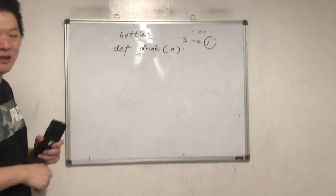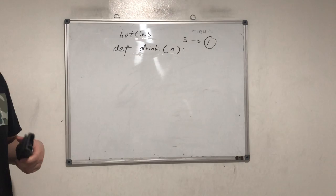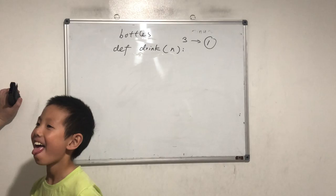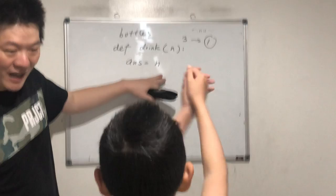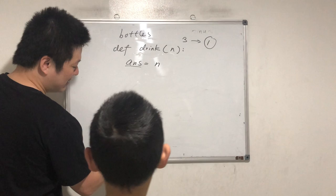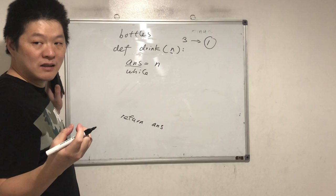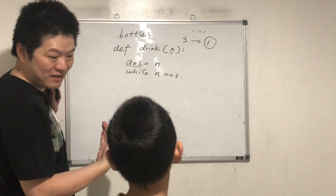Given n bottles, how many can you drink? Define 'drink'. So n bottles — how many can you drink? Any idea how we're doing this? So if we can divide by three... it's like we simulate the process. At the beginning we can drink n bottles, that's for sure. We want to calculate this answer and return it. n is the current number of bottles.